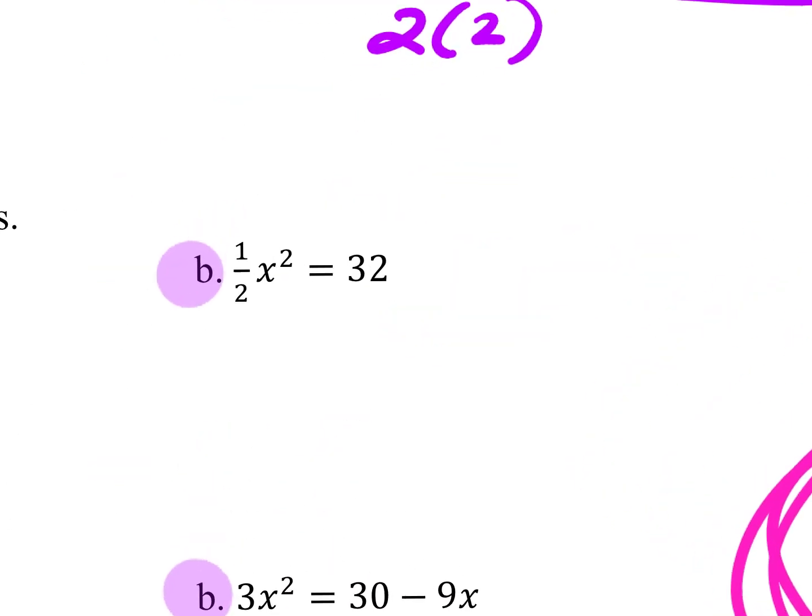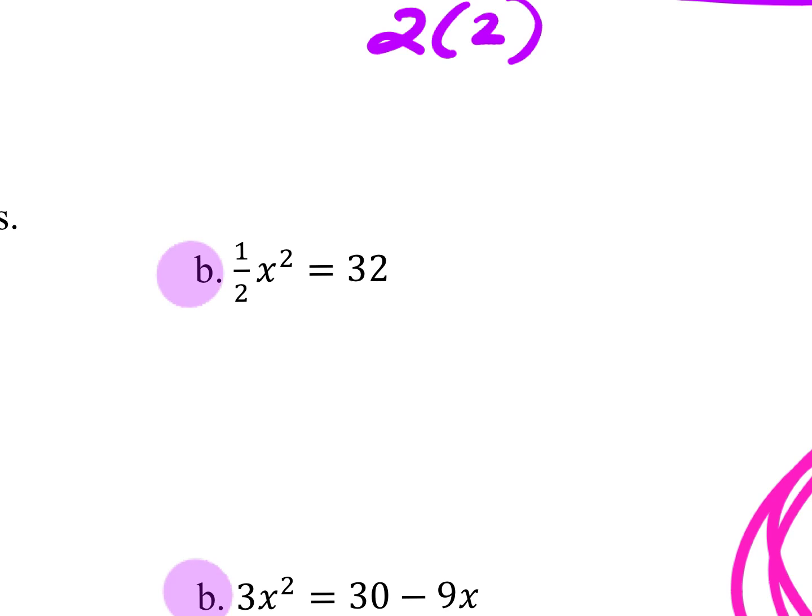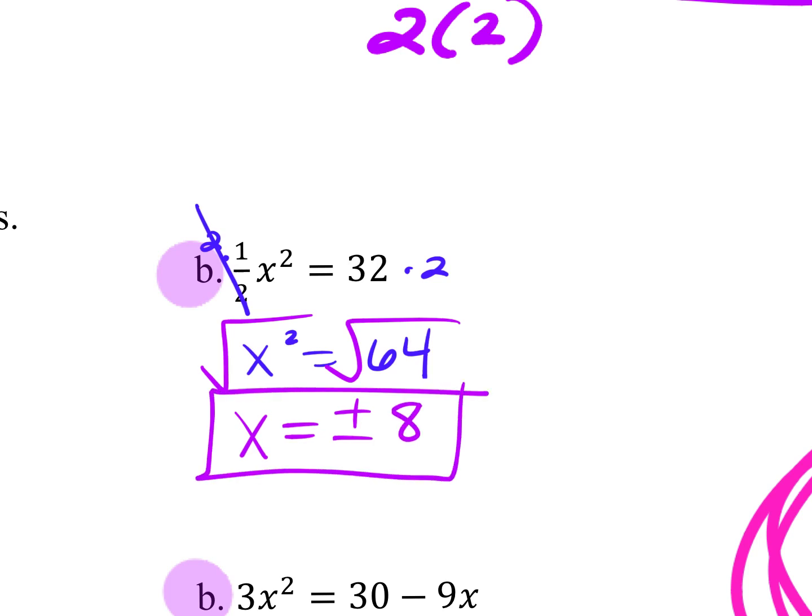31B. How do you solve by square roots? You have to isolate the x squared, and you were going to write that on your note card, right? Solving by square roots, isolate x squared. So you're going to multiply by 2. So x squared equals 64. What's your answer? Be careful. Plus or minus 8. Plus or minus. Thank you, Allie. Plus or minus when you take the square root. No radical of both sides. So x equals plus or minus 8.